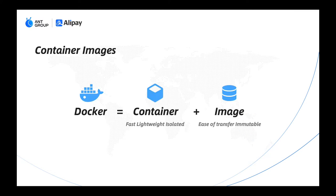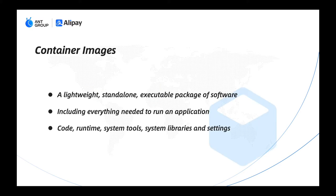The container ecosystem is always inseparable from image. For example, Docker is composed of container and image. Container is fast and lightweight, and there is a certain isolation for the application running environment, while image provides an immutable data source. In more detail, a container image is a lightweight, standalone executable package of software.